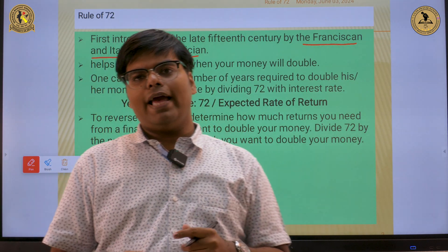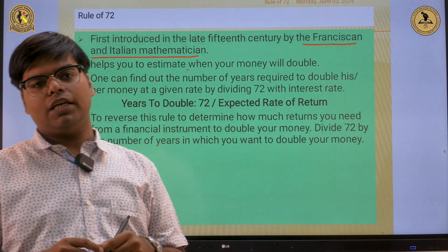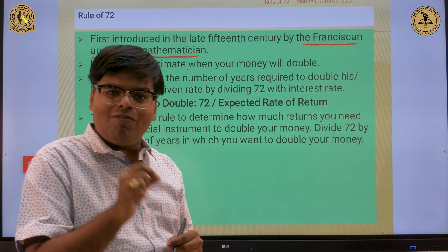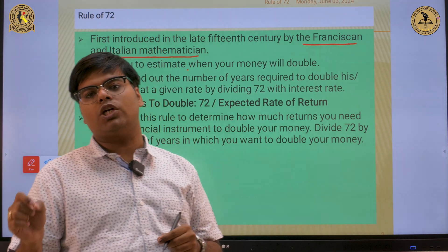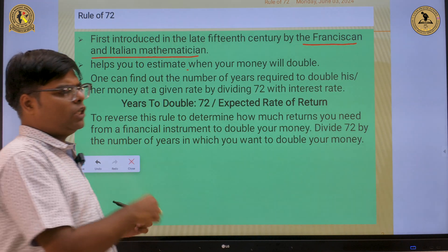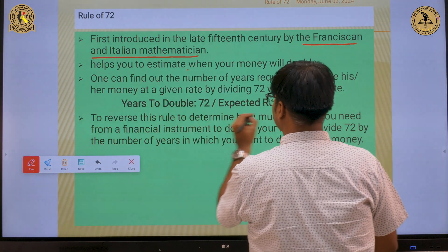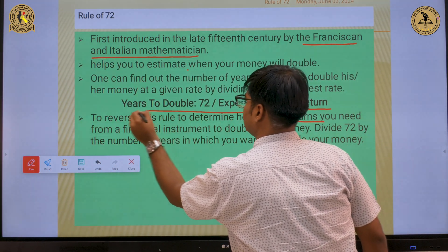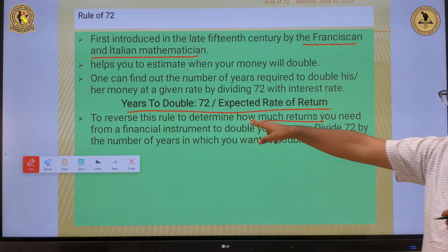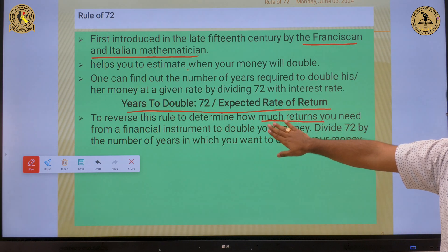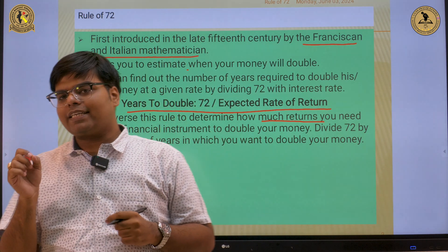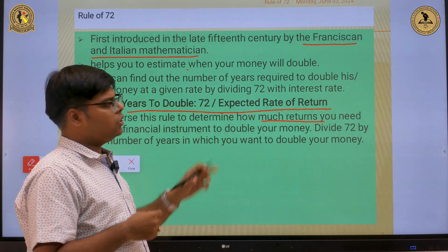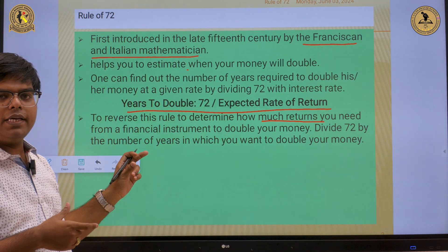This rule of 72 explains the time period in which your invested amount will get double at a given annual rate of return. To put it into the formula, this rule comes out to be: years to double equals 72 divided by expected rate of return.